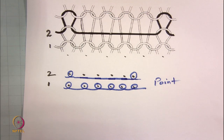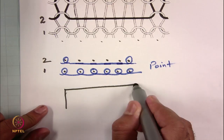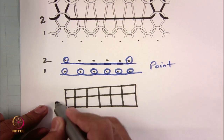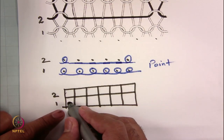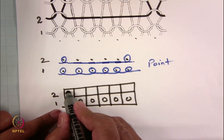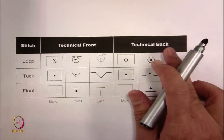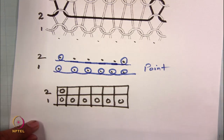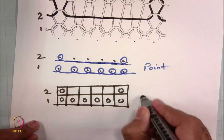For box notation, since it has two courses, you need two rows and six columns. In the first course, you have all technical back loops, so all zeros. In the second course, you have a technical back loop in the first column, then four blank boxes representing the four floats on the technical back side — float means no intermeshing points, so it remains blank. And then in the sixth column, you are again making a loop. This is the box notation.